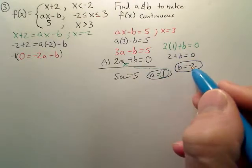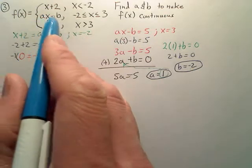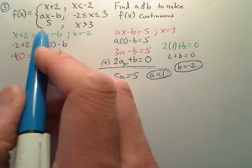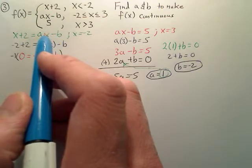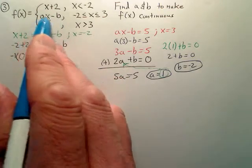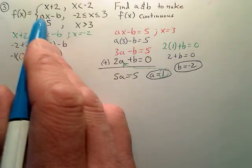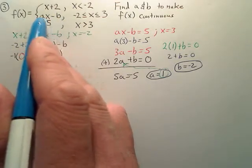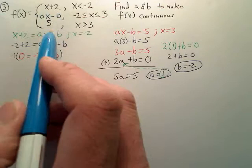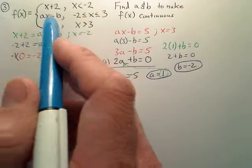When a is 1 and b is negative 2 for this equation, all these graphs, this whole graph will be continuous. So the function right here technically will be 1x plus 2. This will be an x plus 2 equation right here in the middle. x plus 2 will make all of these continuous, which is actually the same graph as the top one.